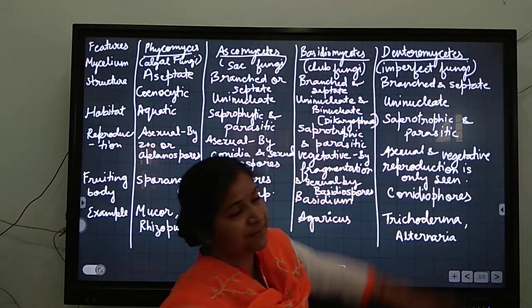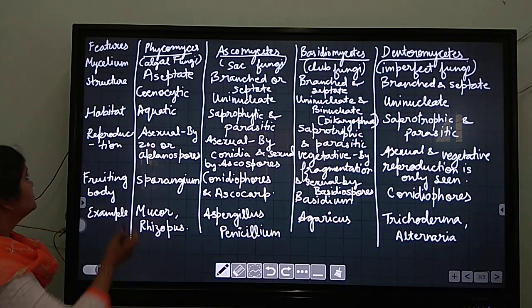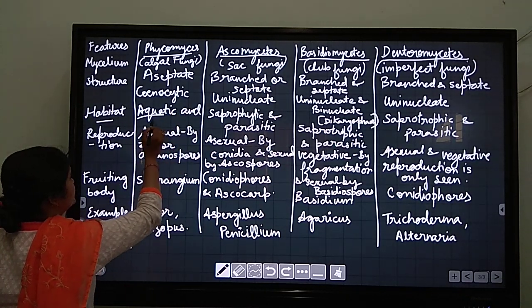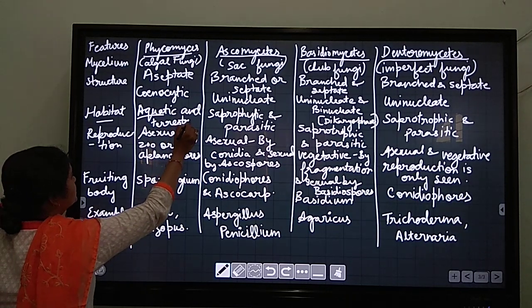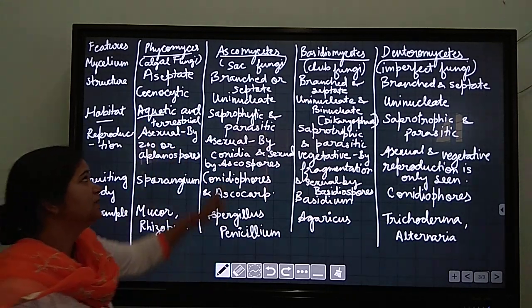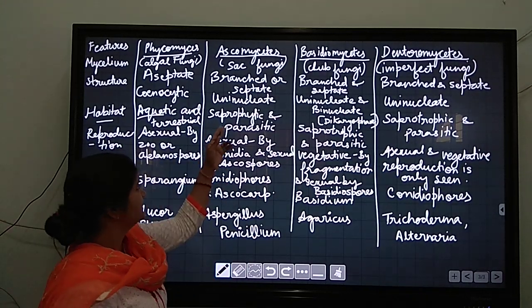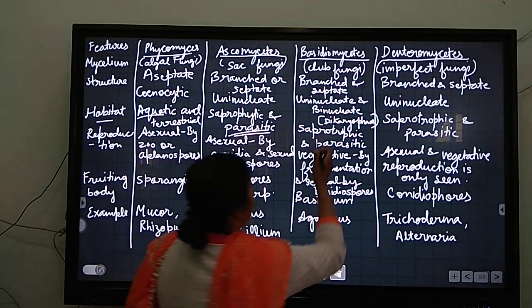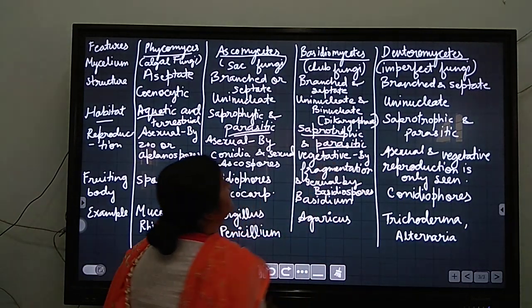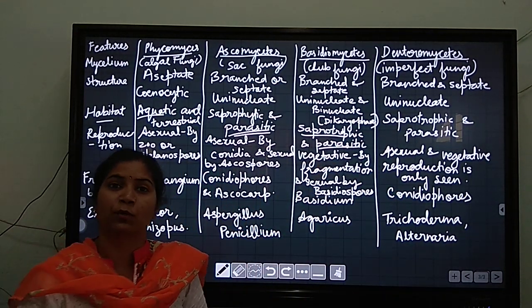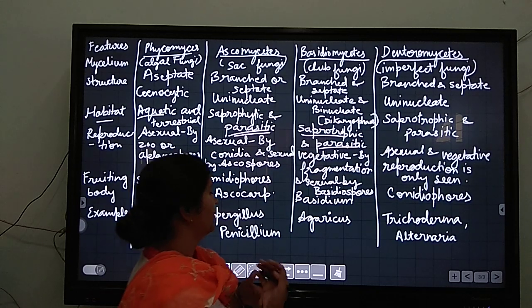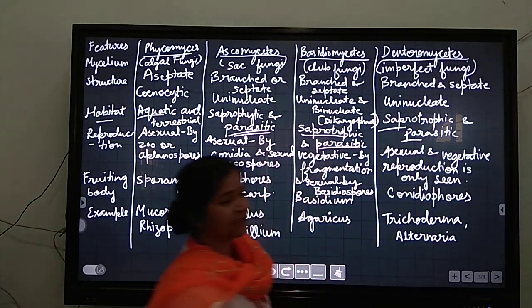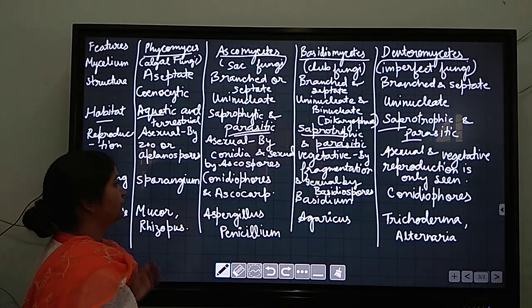Coming to habitat, it is found in aquatic as well as terrestrial, both places. Ascomycetes is mostly saprophytic and parasitic causing various plant diseases and animal diseases. Basidiomycetes is both on dead decaying organic matter, growing on leaf matter and parasitic also. And deuteromycetes is saprophytic and parasitic.